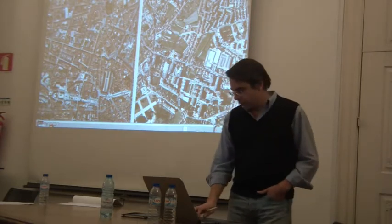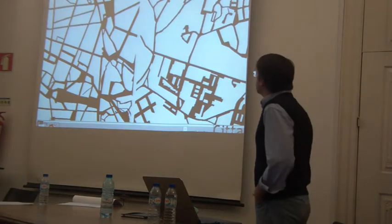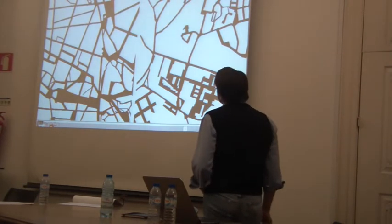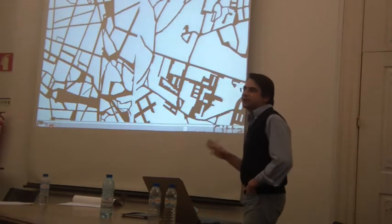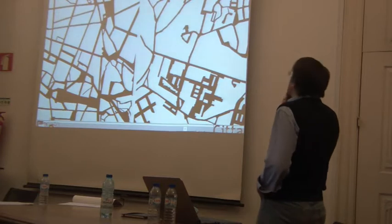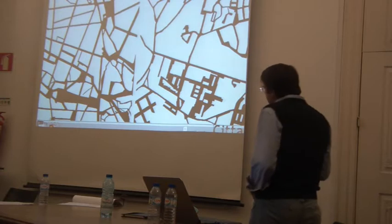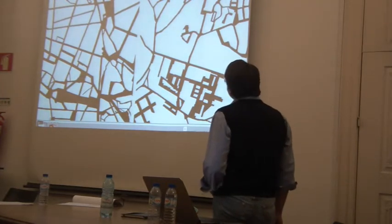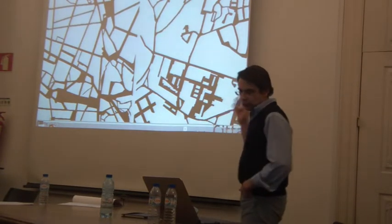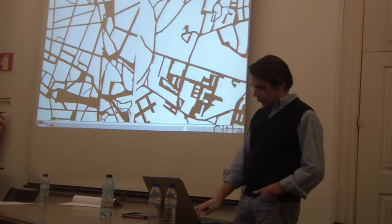What we are going to argue is that there is a common thing between the two: the public space system of both examples is pretty much the same thing. It is made of space, it is a network, and as a network it is a relational object made of elements in relation to each other. The form of it is of course quite different, but we have tools to analyze both and to understand the differences.